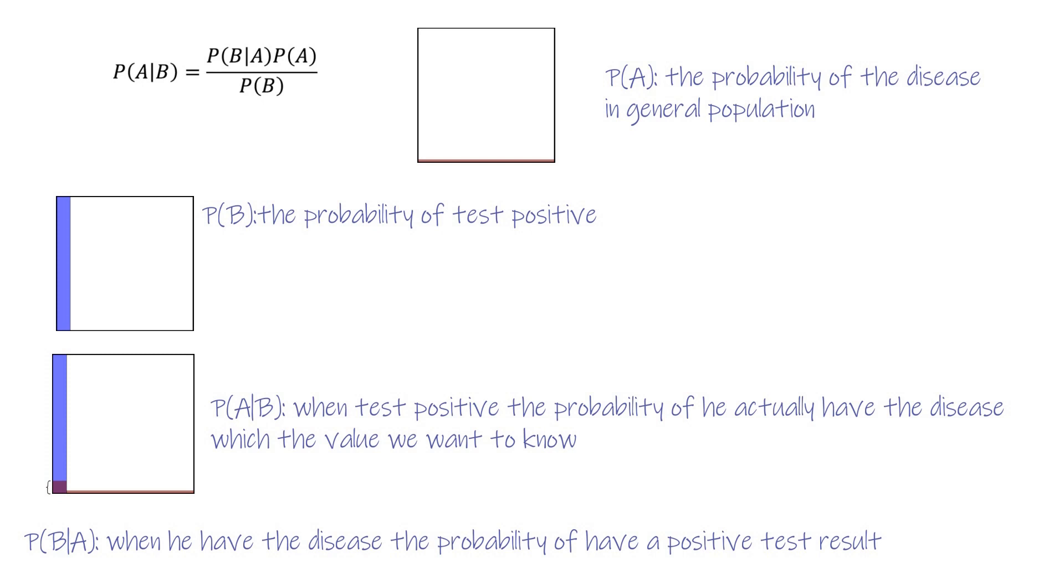We know that the screen test accuracy means if someone has the disease, the probability of having a positive test result. So, P(B|A) is 99%. P(A) is the probability of the disease in general population, which is 1/1000.